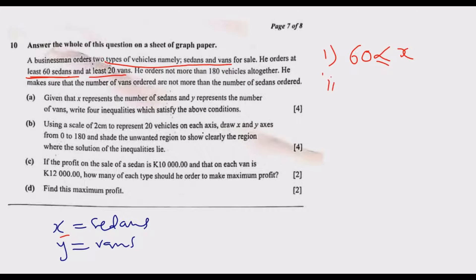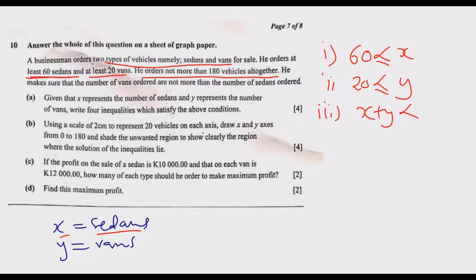Second, he orders at least 20 vans, so y ≥ 20. Twenty is the minimum — it can't go below 20. Third, if you add x (sedans) plus y (vans), these should not be more than 180. So the maximum you can order is 180. 'Not more than' means 180 is the cap — the maximum — so x + y ≤ 180. Anything below that is acceptable.